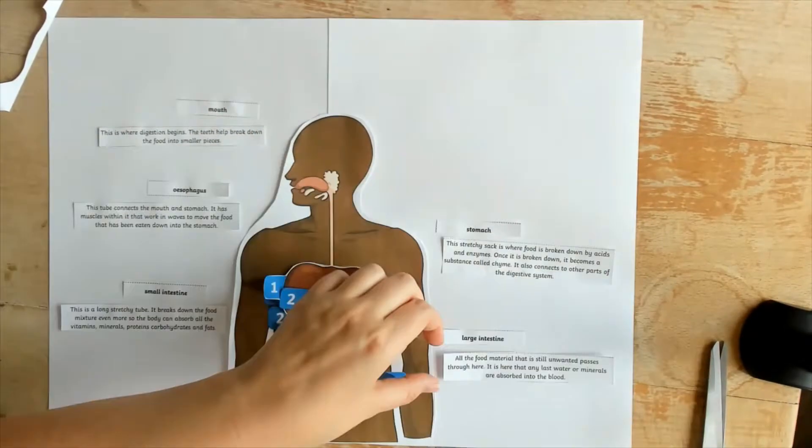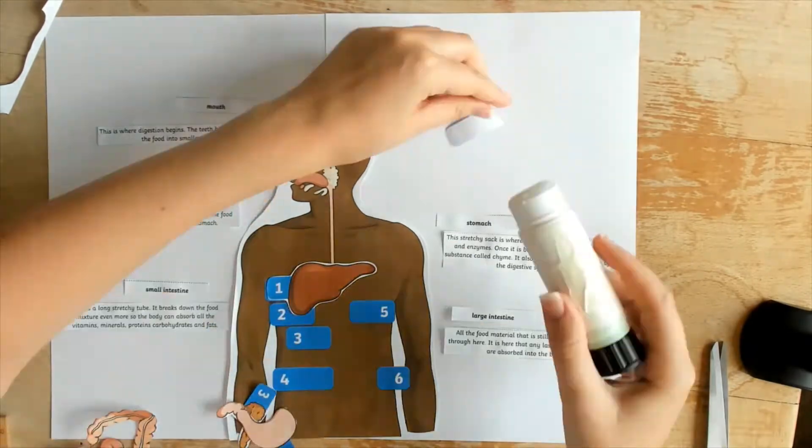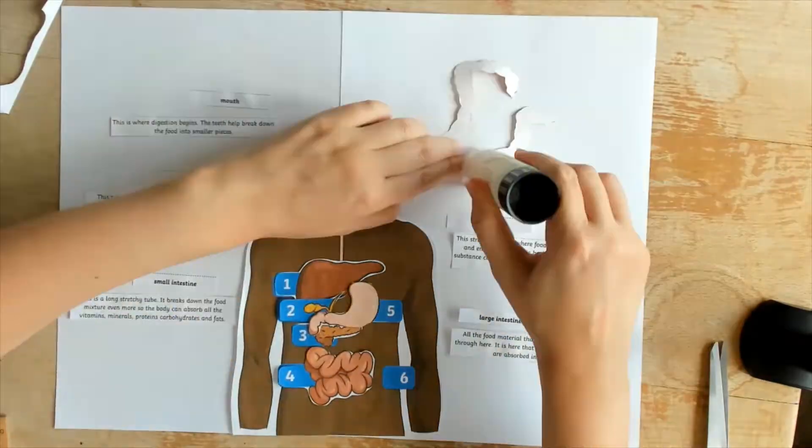When they are happy with the placement, they can glue down the pieces of paper and draw ruler lines matching the name to the correct organ.